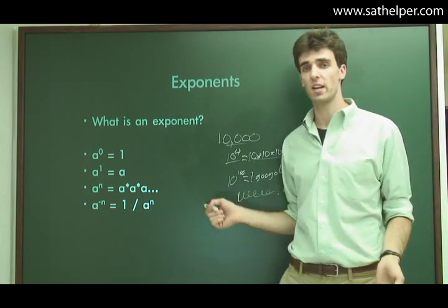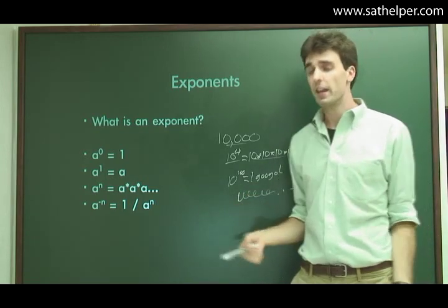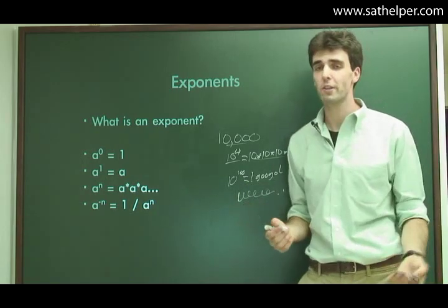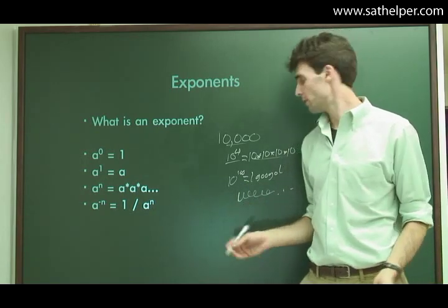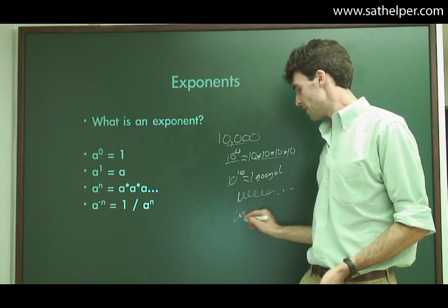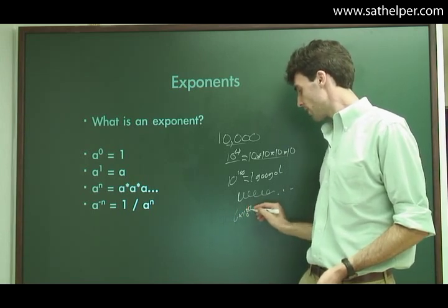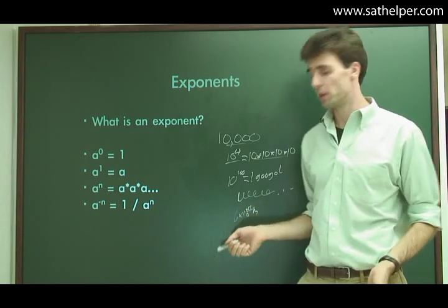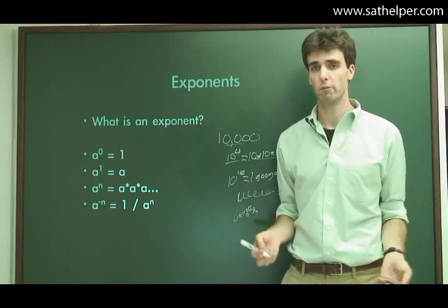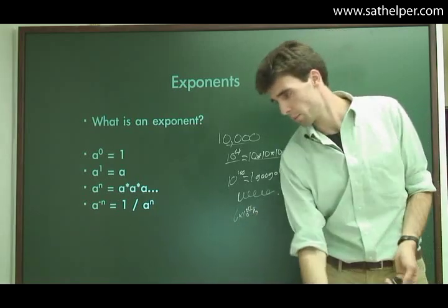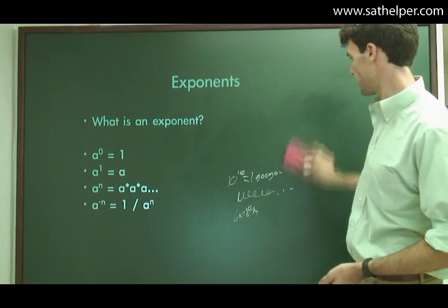So scientific notation lets us write numbers like this very easily. And again, in physics, maybe we don't use googols that much, but the mass of the Earth, for example, is about 6 times 10 to the 24th kilograms. That's a huge number, but using scientific notation, very easy to write. Similarly, you can write small numbers with negative exponents, and we'll talk about that in a second.